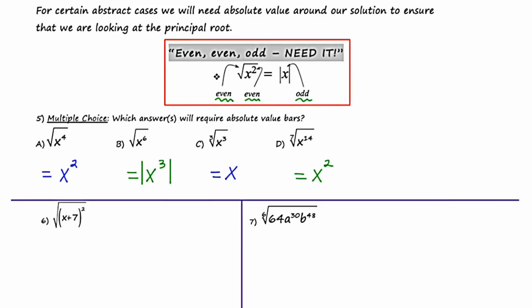Moving to answer choice C — we have odd, odd, odd. The index is odd, the power on the inside is odd, and this is to the power of one, which is odd. That does not adhere to our chant, so we don't need absolute value. The answer is just X without the absolute value bar. For answer choice D, the seventh root of X to the fourteenth: the index is odd, exponent is even, answer is even — odd, even, even. That's not the chant either, so we don't need absolute value in this case.